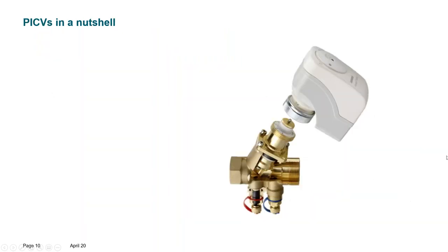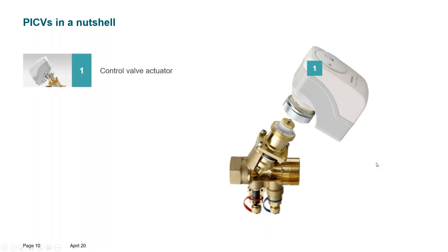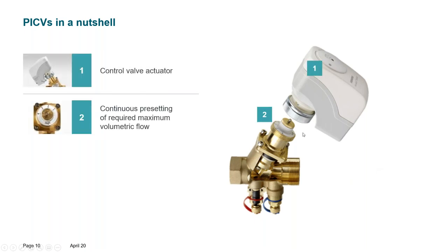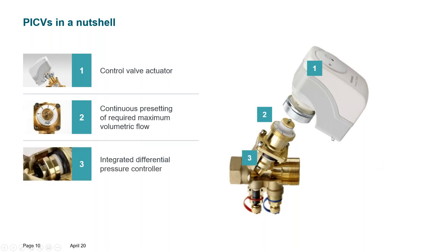If you want to optimize the efficiency of this process, you can opt for PICV. A PICV is typically three devices in one: it is a control valve, it has a manual flow pre-setting for commissioning, and dynamic balancing is provided by a mechanical differential pressure regulator built into the valve.